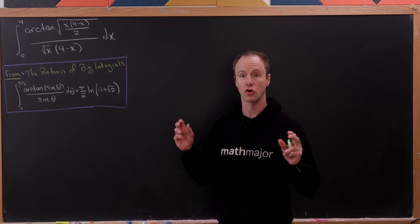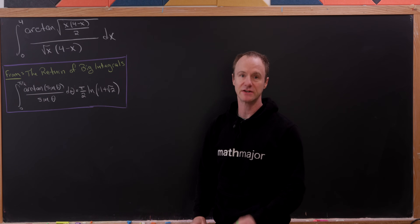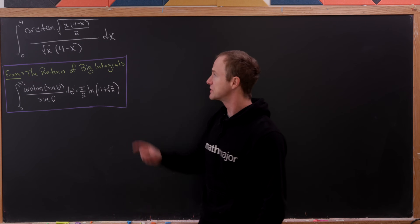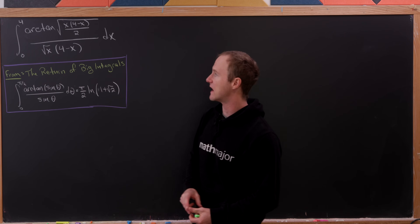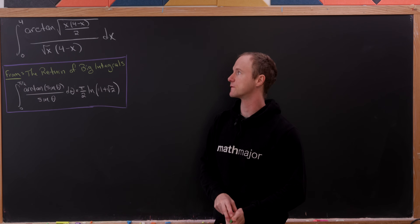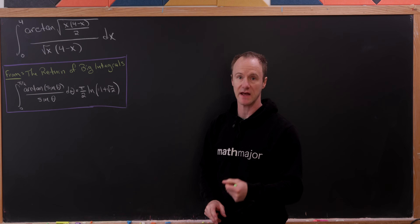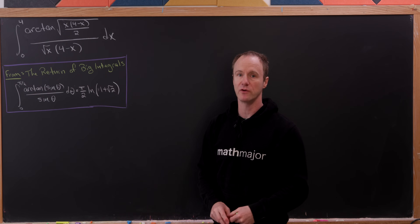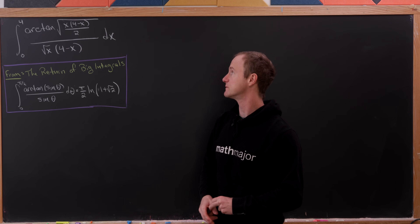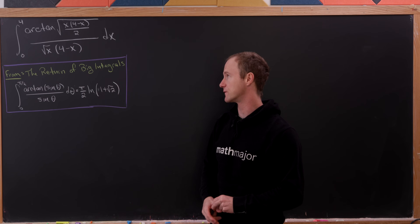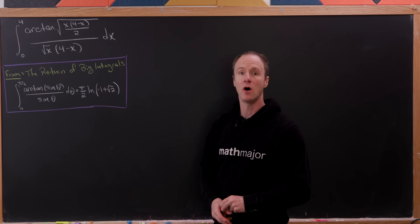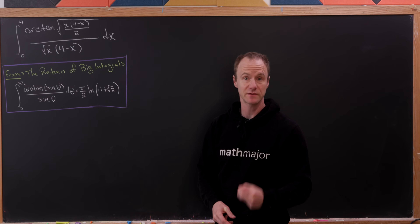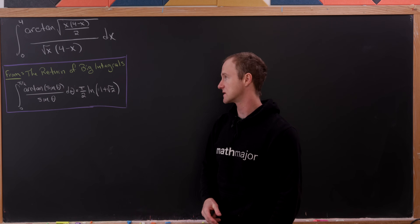Today we've got a classic crazy big integral problem. In particular, we're going to evaluate the integral from zero to four of the arctan of the square root of x times four minus x over two, all over the square root of x times four minus x.